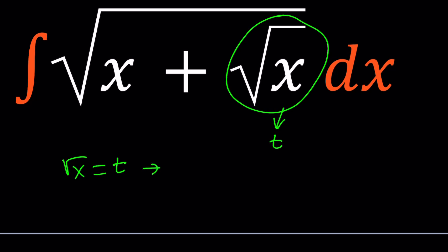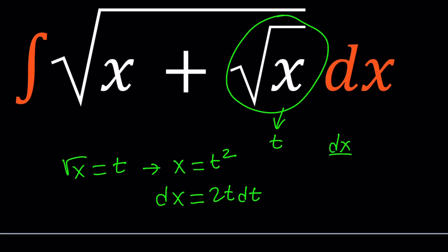I'll square both sides to get x = t². Then I need to find dx: differentiate and multiply by dt. The derivative of t² is 2t, so dx = 2t dt. Another way to see this: dx/dt = 2t, and then cross-multiplying gives the same answer. That's where the dx comes from.